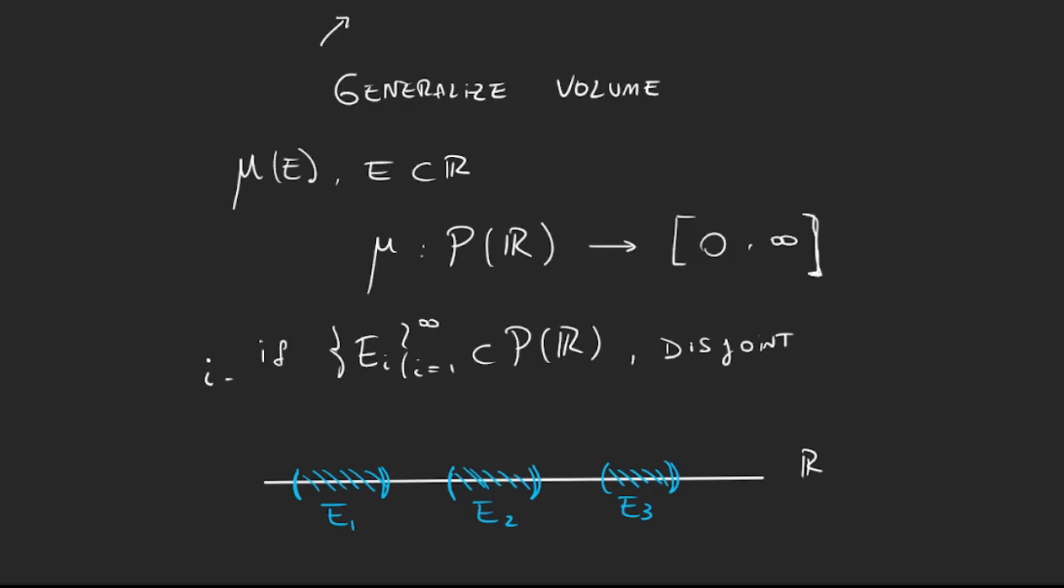So disjoint means that E_i intersection E_j is the empty set if i is different from j. Then what we want is for μ of the union of all these sets from i equals one to infinity of E_i, we want the measure of the union of all these sets to be exactly the sum of the measures of each of them. It's nothing crazy. If we cut a cube in pieces, we want the area of the entire cube to be the sum of the areas of the pieces.